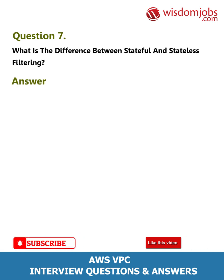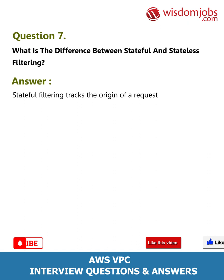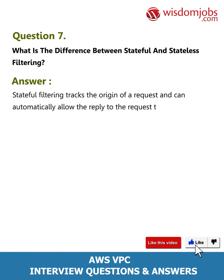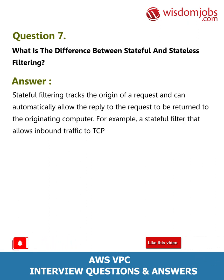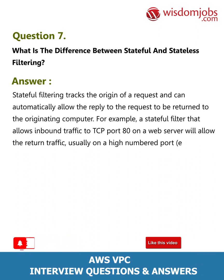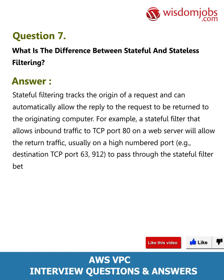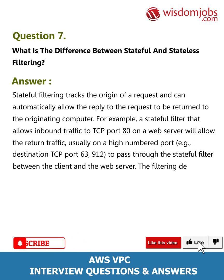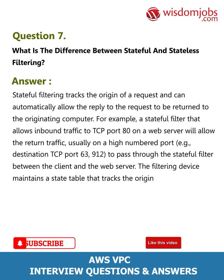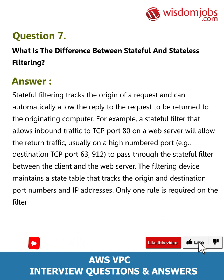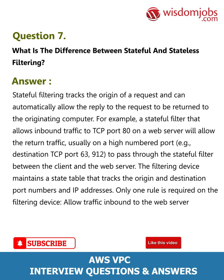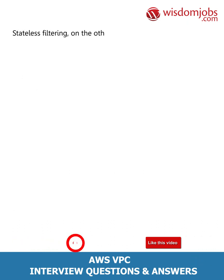Question 7: What is the difference between stateful and stateless filtering? Answer: Stateful filtering tracks the origin of a request and can automatically allow the reply to the request to be returned to the originating computer. For example, a stateful filter that allows inbound traffic to TCP port 80 on a web server will allow the return traffic — usually on a high-numbered port (for example, destination TCP port 63912) — to pass through. The filtering device maintains a state table that tracks the origin and destination port numbers and IP addresses. Only one rule is required: allow traffic inbound to the web server on TCP port 80.